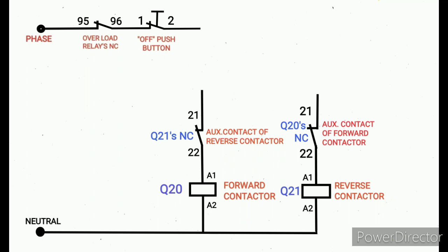Next we're going to draw forward push button. This forward push button is in series with off push button and Q21 NC, with the forward contactor coil supply A1. Next we're going to draw the hold on, because the forward push button is momentary type.